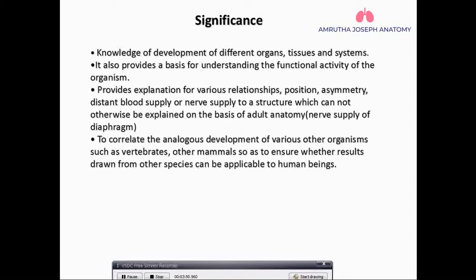Similarly, the kidneys are located on the posterior aspect — how are they placed there? How is the brain developed? Why does the brain have that shape? Why do the ventricles of the brain have that particular shape and position? Some organs are placed in specific areas, like the right kidney being placed a little lower than the left.